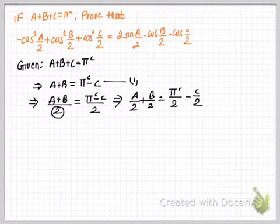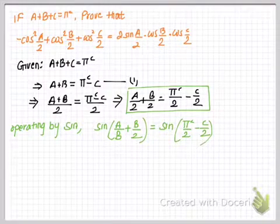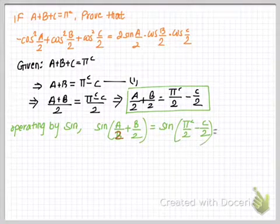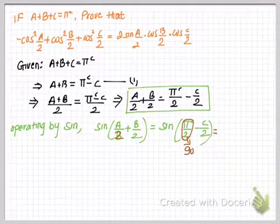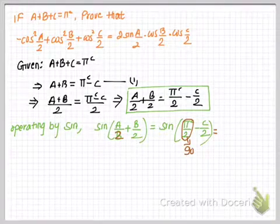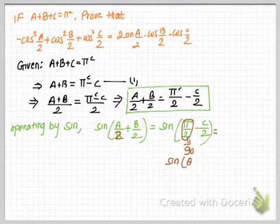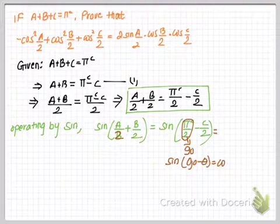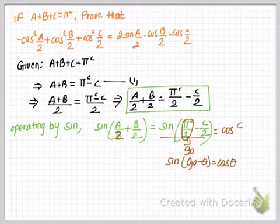I've just distributed the denominator 2 to both expressions in the numerator. On operating by sine, what we have is sin(A/2 + B/2) equals sin(π/2 − C/2). Here π/2 is simply 90 degrees. We know that sin(90° − θ) equals cos θ, so in place of θ we have C/2, and we can simply write cos(C/2).